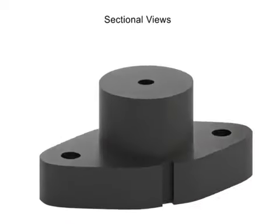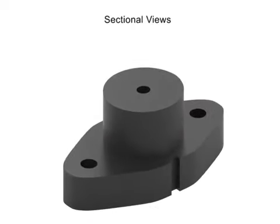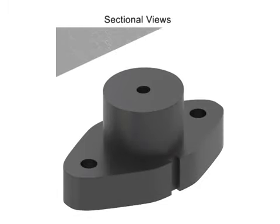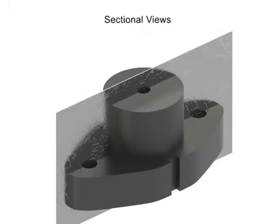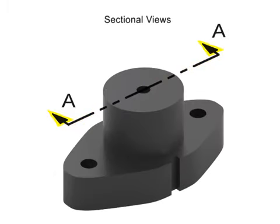A sectional view is made through an outside view. To make the section, imagine a plane cutting through the part. The cutting plane is indicated by a line with arrows called a cutting plane line. The arrows on each end indicate the direction you view after the cut is made and are typically labeled with letters that identify the new view.